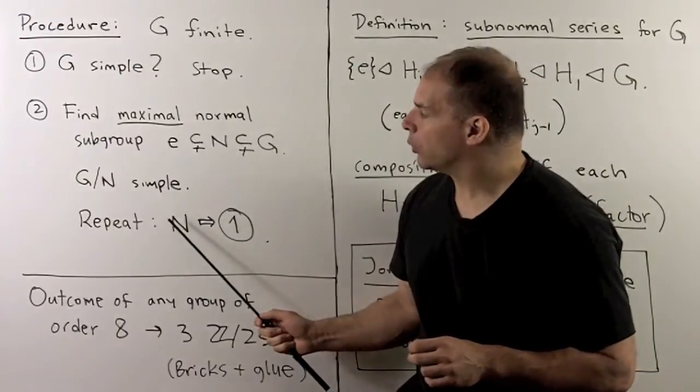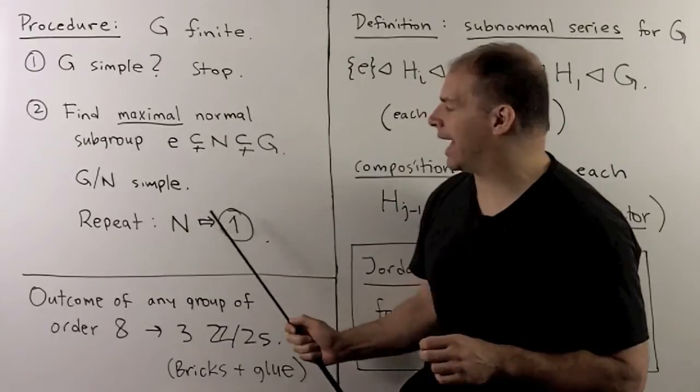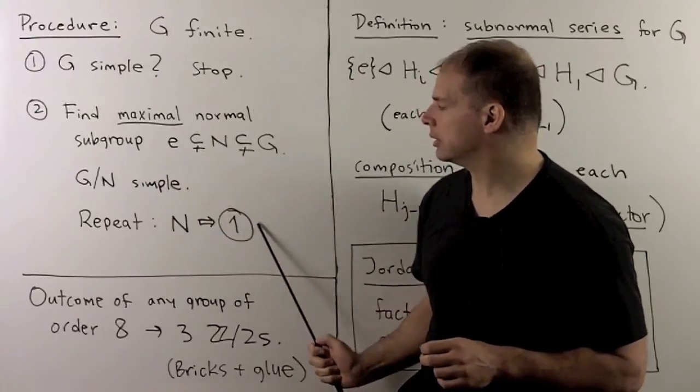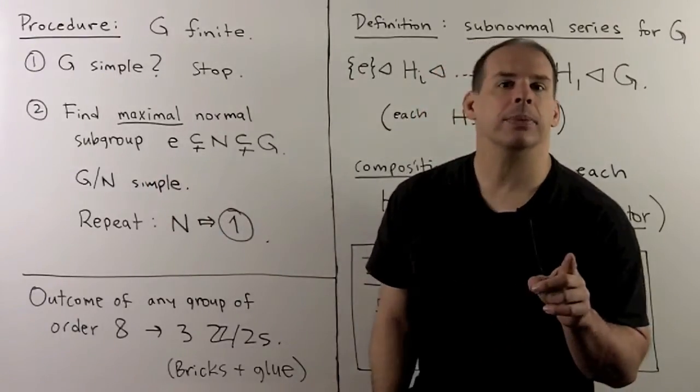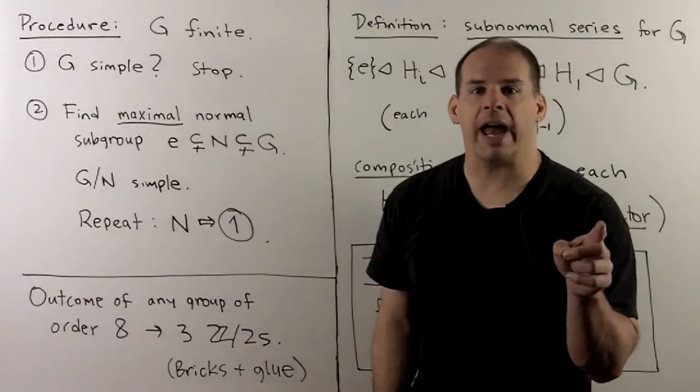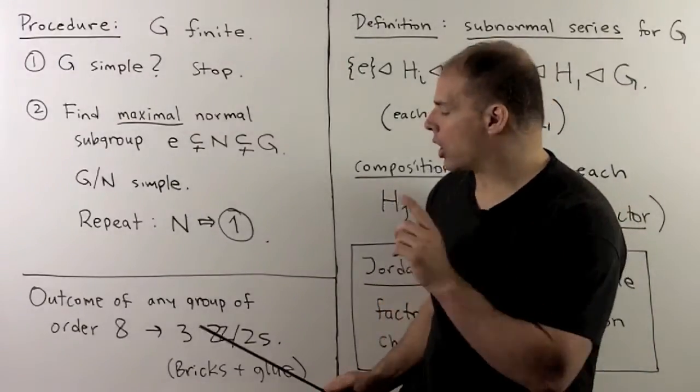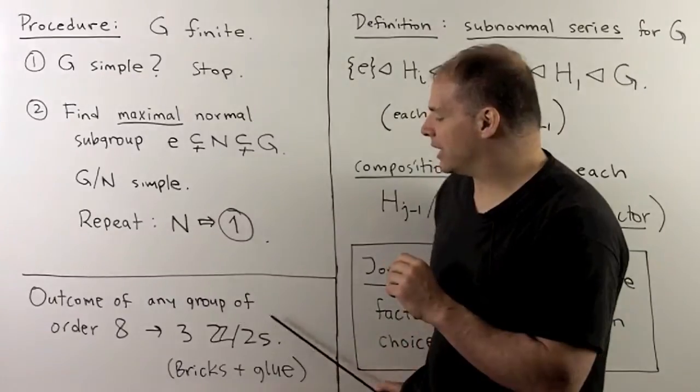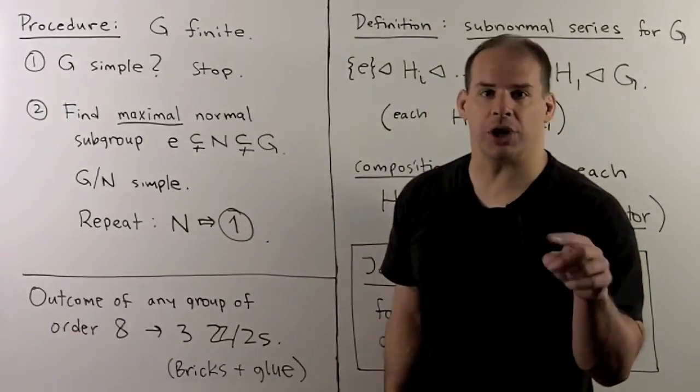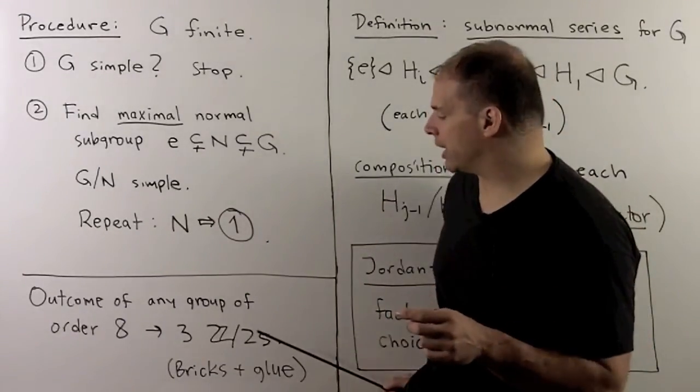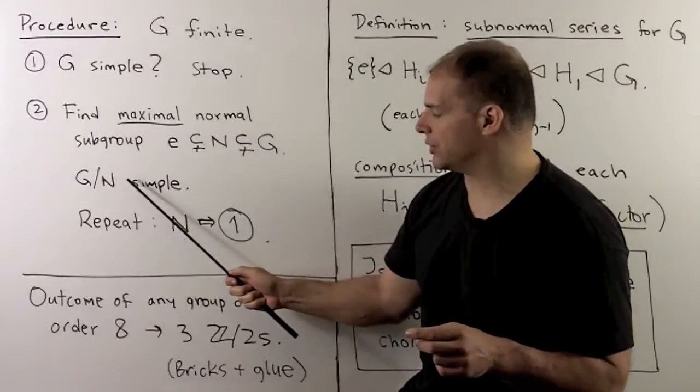Then, we're going to repeat our procedure by putting N in to step one. Now, if we take any group of order eight, what will come out are going to be three Z mod twos, like we've seen in the quaternion example, where the Z mod twos are just going to be our G mod Ns.